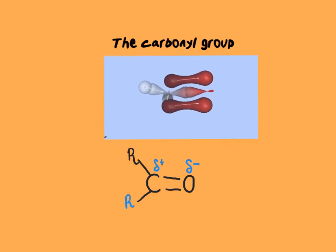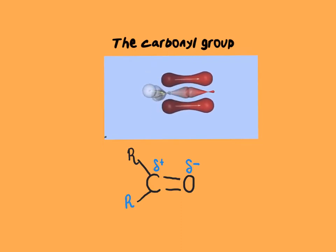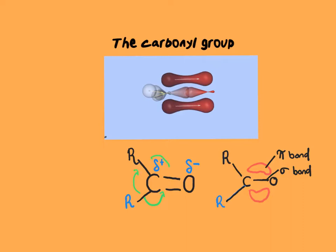Let's now take a look at the carbonyl group itself, the C double bond O. What's not really studied at AQA is the nature of the C double bond O — that it is in fact two different types of bonds. There's a pi bond and a sigma bond, and it's a planar molecule. The pi bond is formed by the sideways overlap of two P electrons, one from the carbon atom and one from the oxygen atom, and it's slightly weaker than the sigma bond.